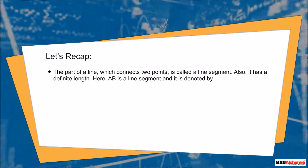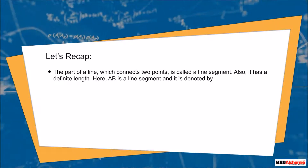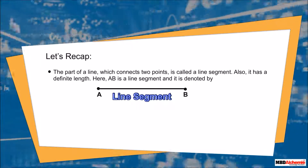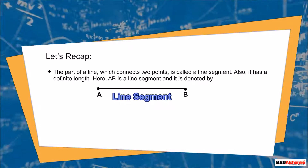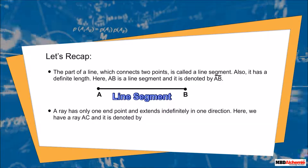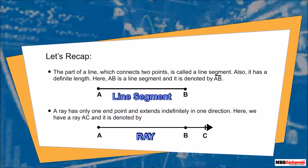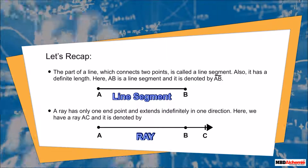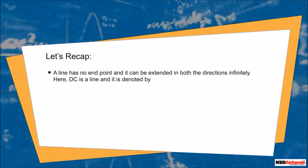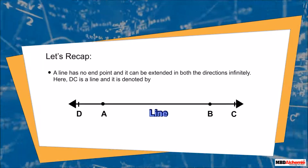Let's recap. The part of a line which connects two points is called a line segment; it has a definite length. AB is a line segment, denoted by a line over the top of the alphabets. A ray has only one endpoint and extends indefinitely in one direction. Ray AC is denoted by a line with a single arrowhead over the top of the letters.